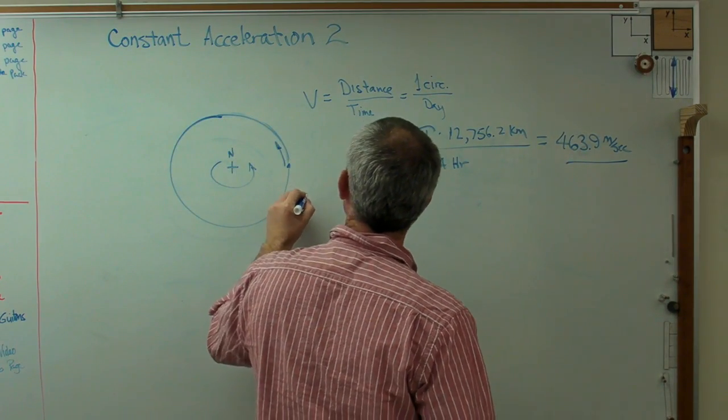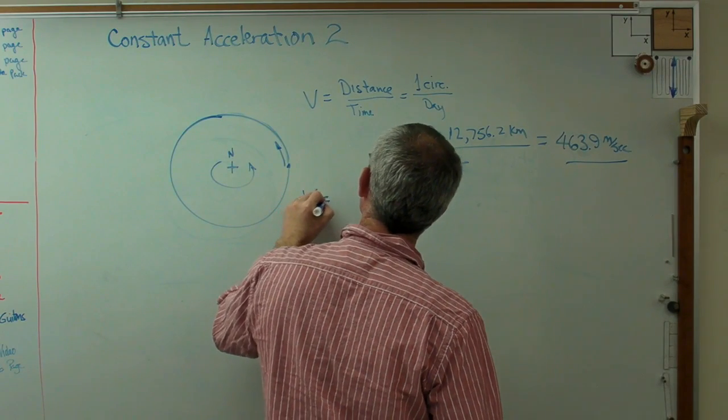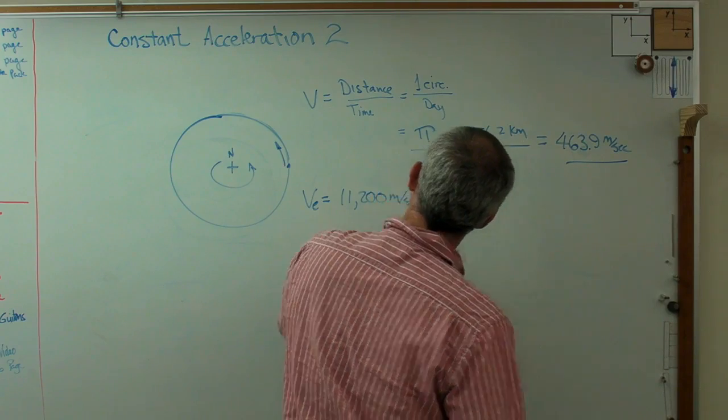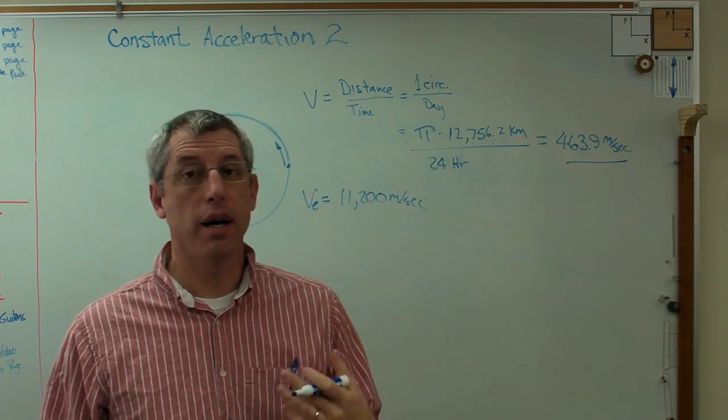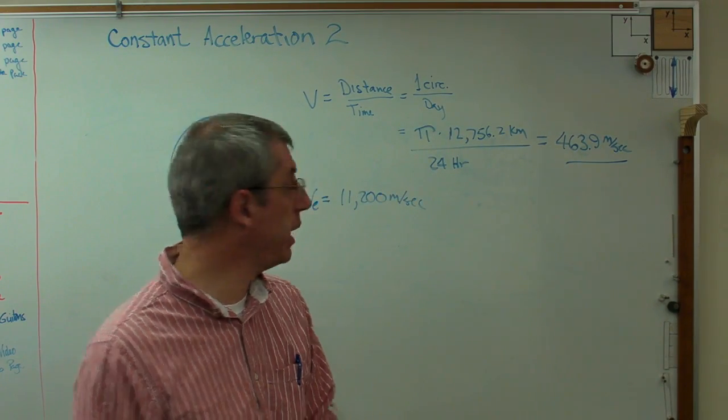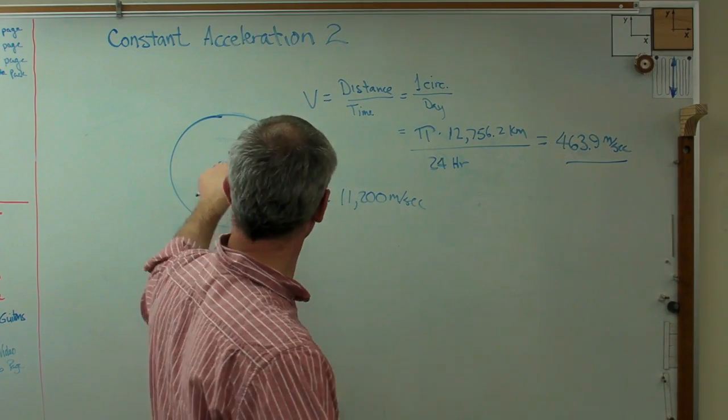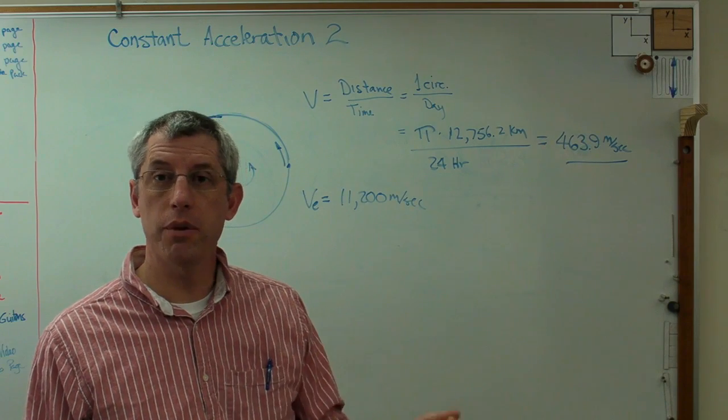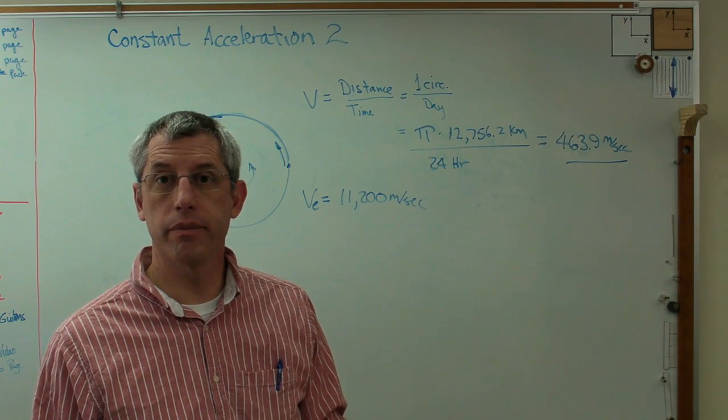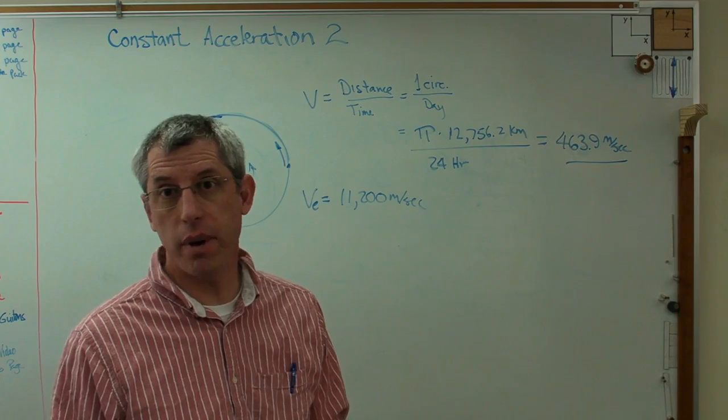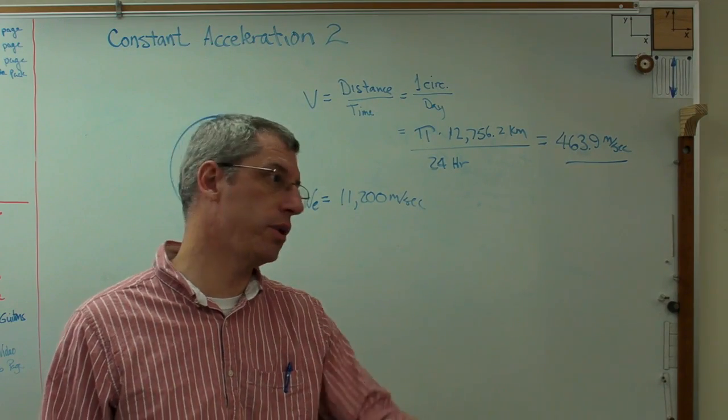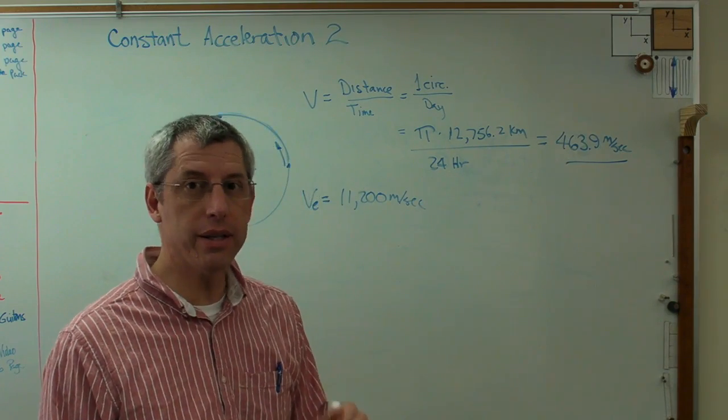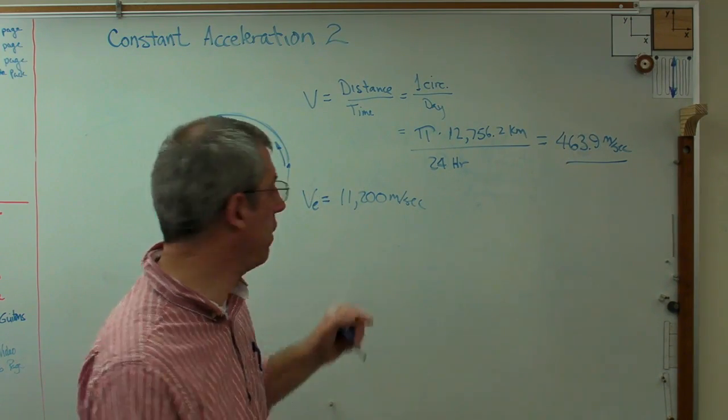The escape velocity from the Earth's surface is 11,200 meters per second. So if I can get an object moving 11,200 meters per second with respect to the surface of the Earth, or with respect to the center of gravity of the Earth, the object is going to leave Earth's gravity forever, never come back. If we want to send a space probe to the stars or some distant planet, that's the minimum. It has to be going at least that fast. More than that would be great.